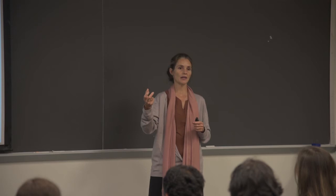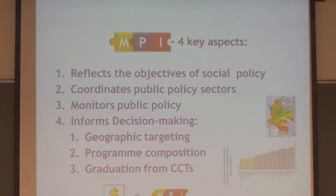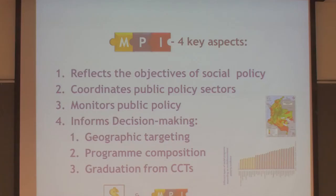Colombia set a goal — when the MPI was launched — to reduce it within a four-year time span, specifying how many people and what percentage coverage there should be at the end. In order to realize that aim, they needed the measures to be monitored. Colombia's measure is updated every year, annually, using the survey of quality of life or conditions of life. The fourth goal was to inform decision-making, including geographic targeting.